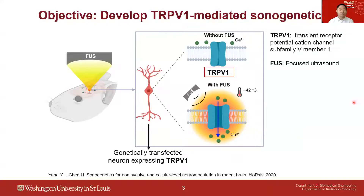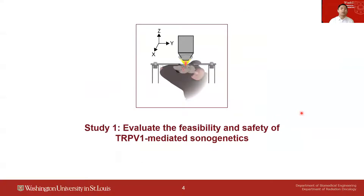We have observed that TRPV1 is an ultrasound-sensitive ion channel. As illustrated here, neurons in which we use viral vectors to overexpress TRPV1 can be activated by ultrasound mild heating. The objective of this study was to develop TRPV1-mediated sonogenetics, and we first evaluated the feasibility and safety of TRPV1-mediated sonogenetics.